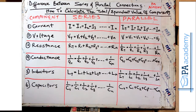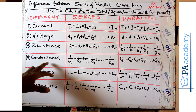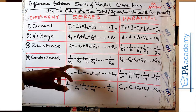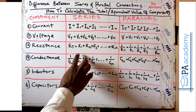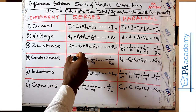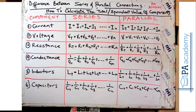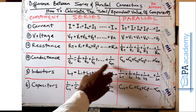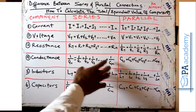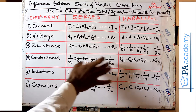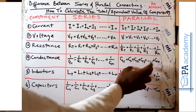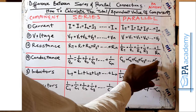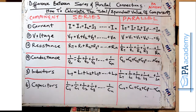For conductance G: to get the total conductance in a series circuit, you use 1/G = 1/G1 + 1/G2 + 1/G3, depending on the total number of conductances in the circuit. For parallel conductance, you simply add the value of each individual conductance in the circuit to get the total conductance.